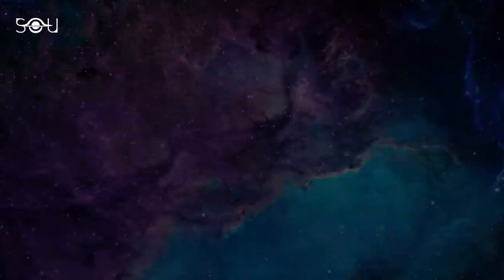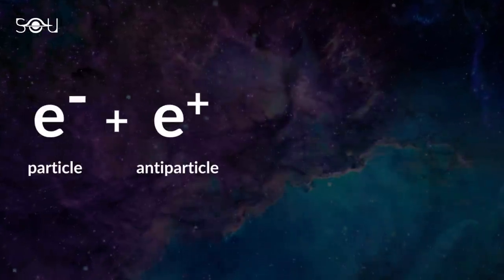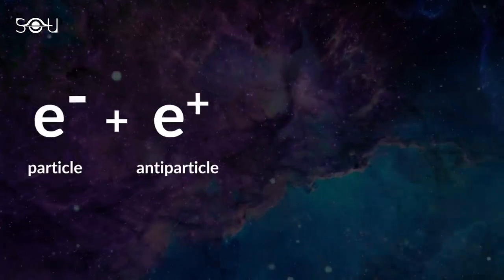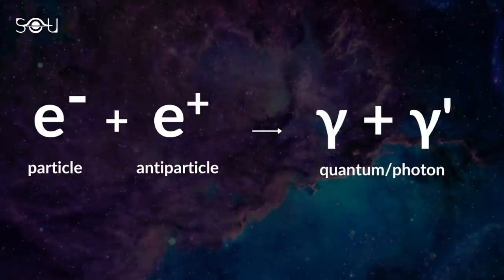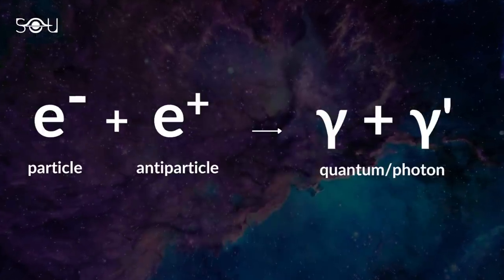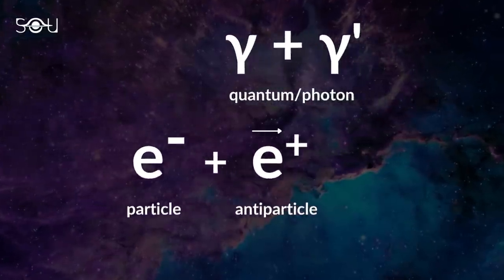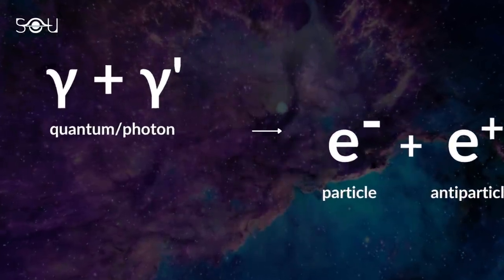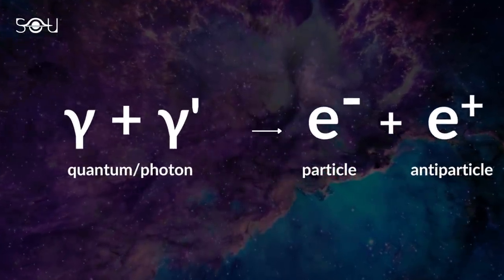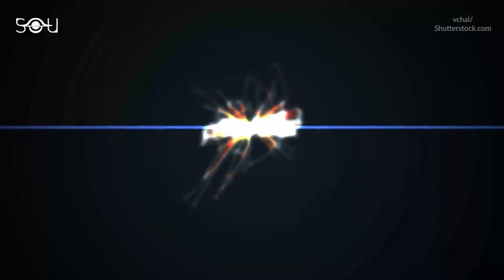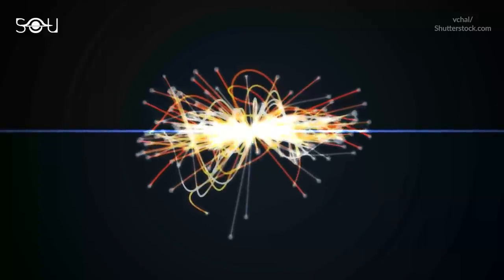It is a known fact that whenever a particle and its antiparticle collide, they annihilate, thereby releasing a small amount of energy. So, following this, E equals mc squared equation says that the reverse process is also possible. This means that if you smash two sufficiently energetic photons into each other, then we should be able to create matter in the form of a particle and its antiparticle.